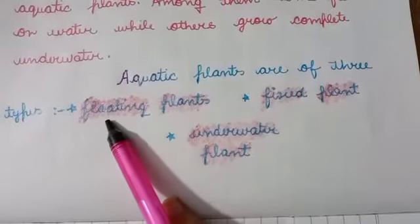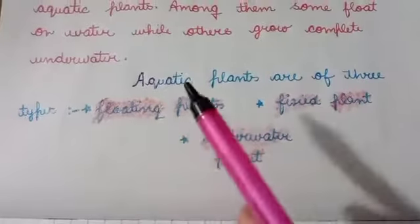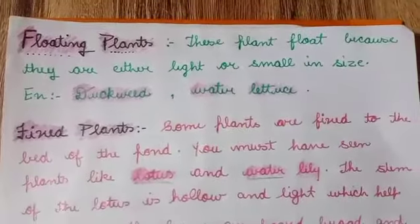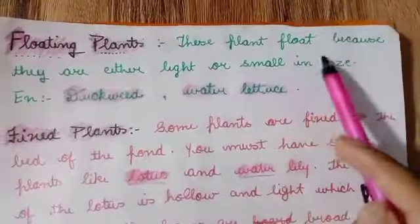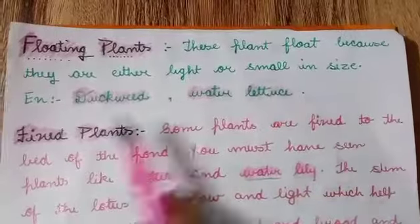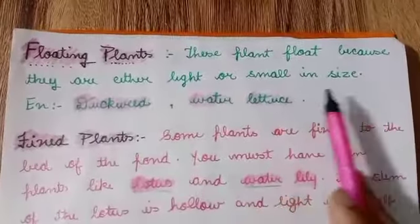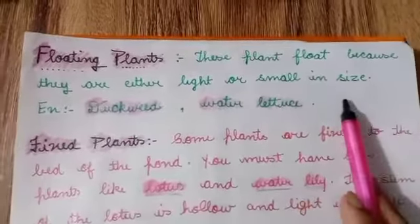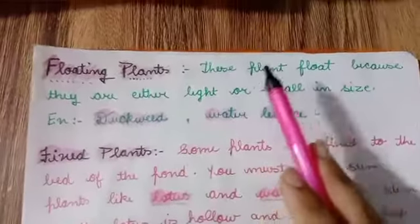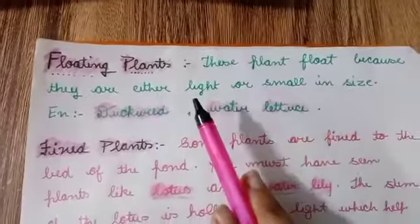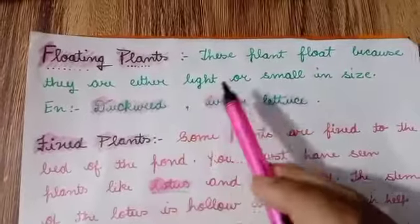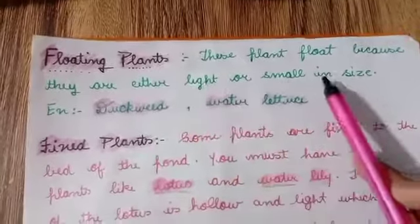First, we will study about the floating plants. What are the floating plants? These plants float because they are either light or small in size. For example, duckweed and water lettuce. Floating plants are the ones that can float easily in water, which are light and small in size.